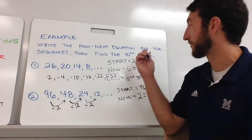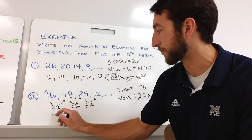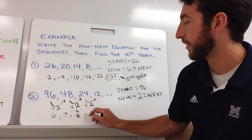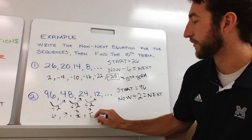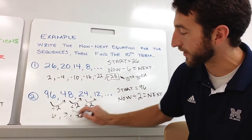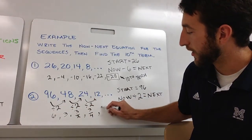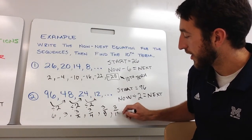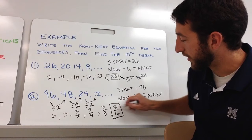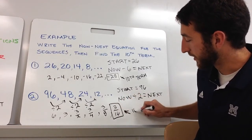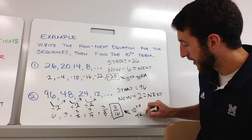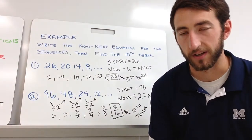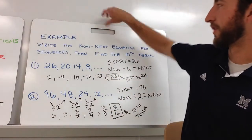Now I need to find that tenth term. I'm going to keep on writing. My next term would be 6, then 3, then 3 halves, then 3 fourths. That's 1, 2, 3, 4, 5, 6, 7, 8, 9, and then tenth. So that is my tenth term. You could also put that in the calculator and have a decimal answer if you wanted to, which would be fine.